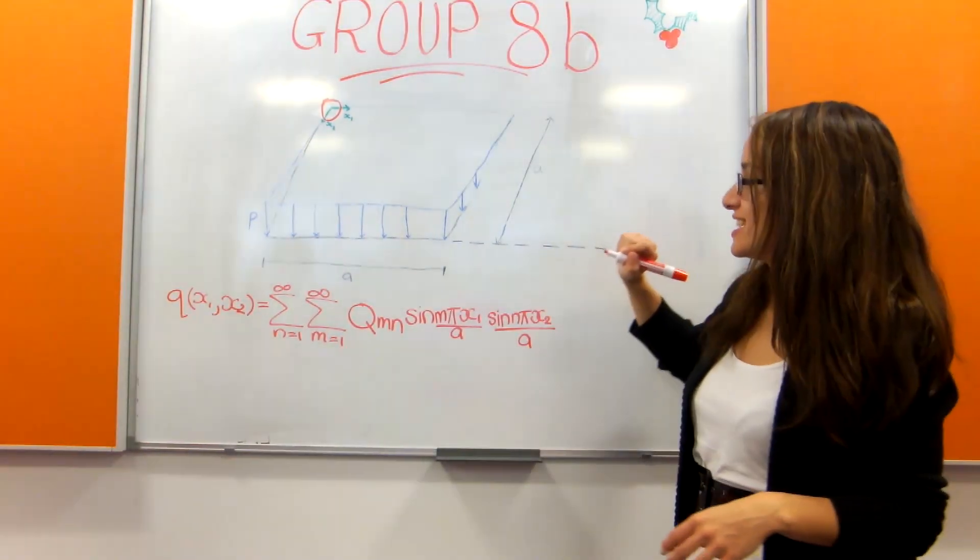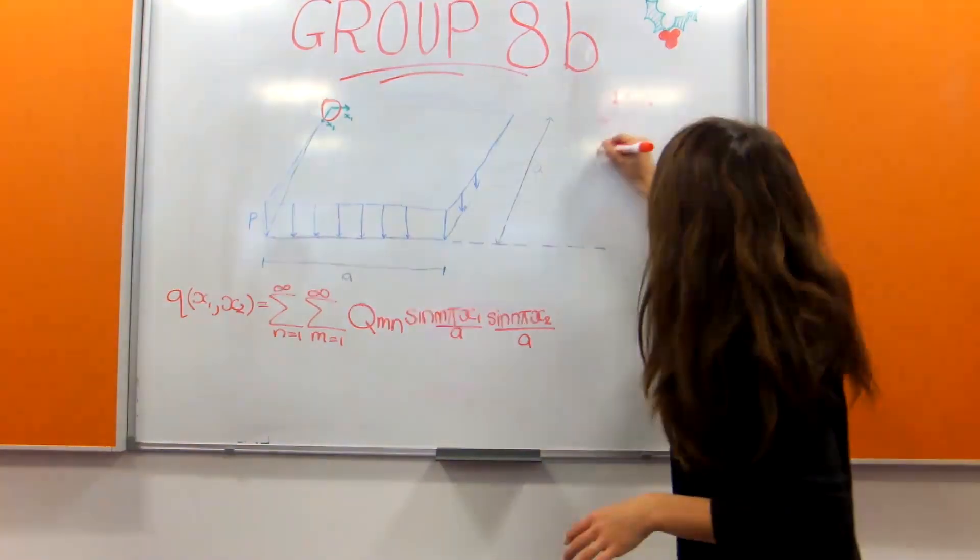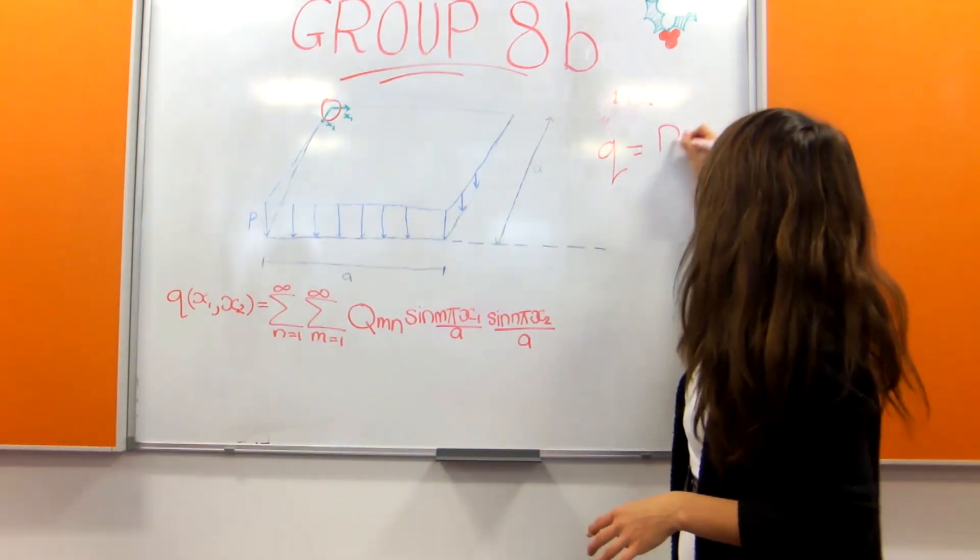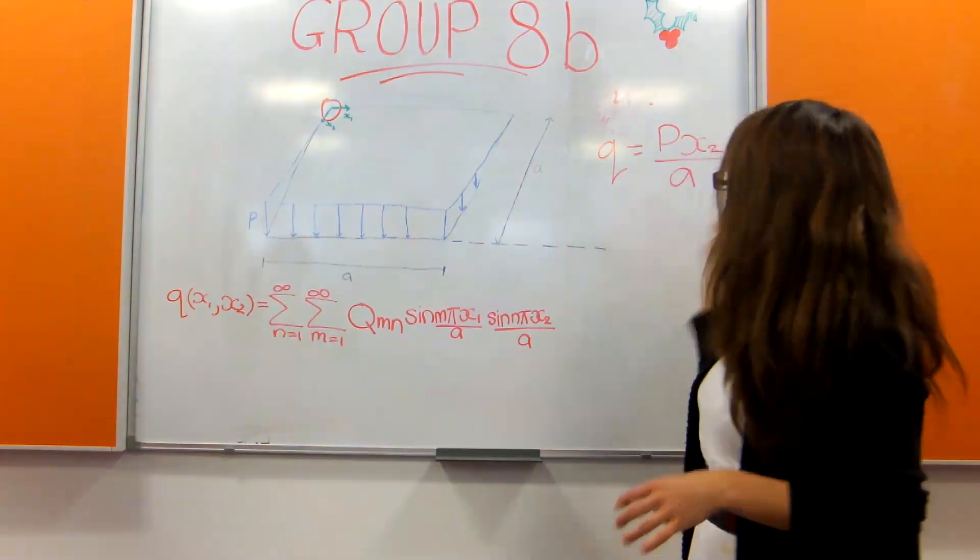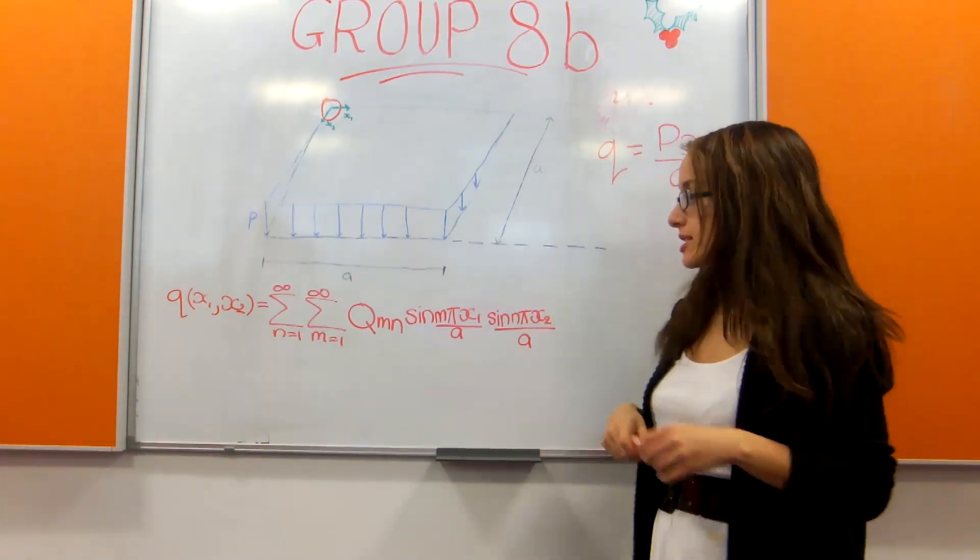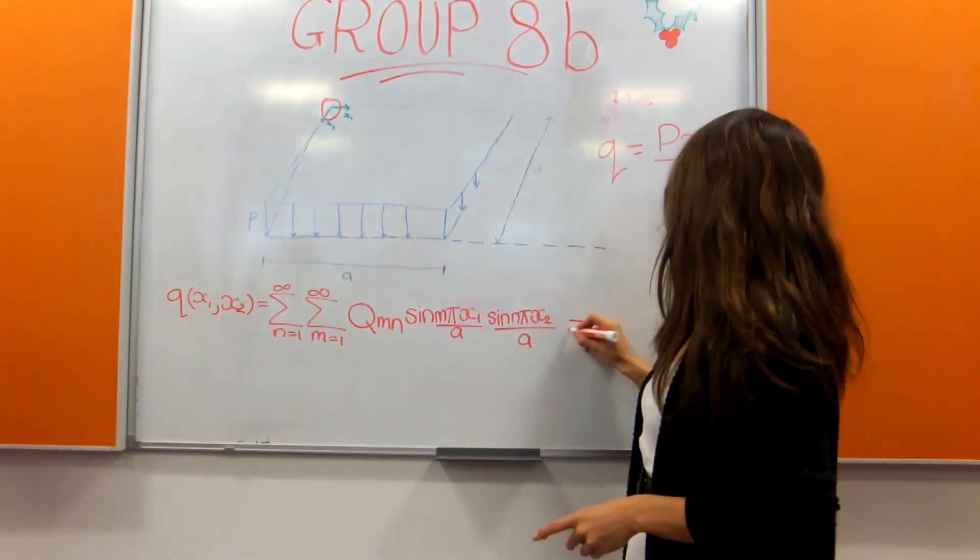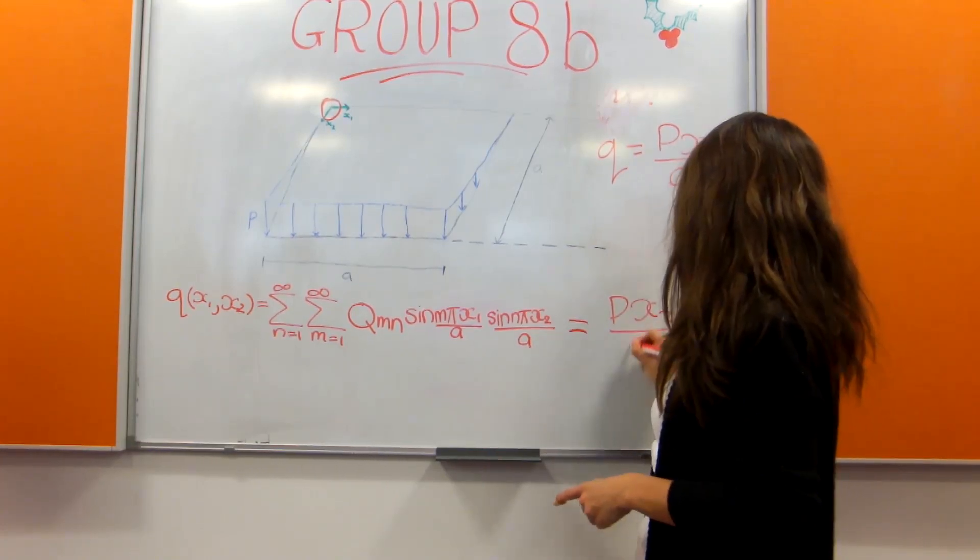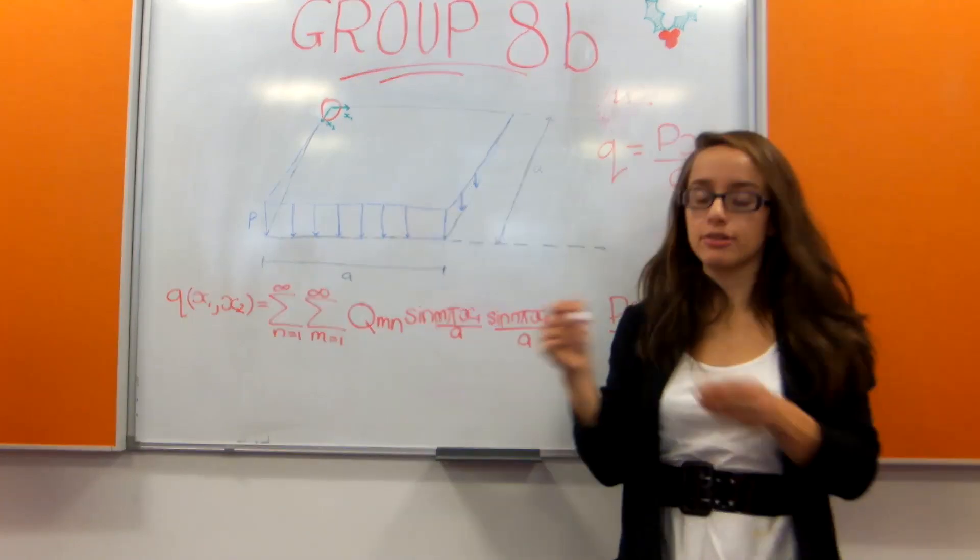We can write the distributed load as a function just of x2 as an x1. We also know that distributed loads can be written as a double Fourier series which is given here. So basically this equals where we can determine the coefficient Qmn using a double integral.